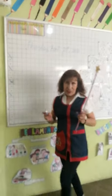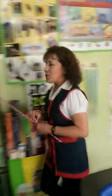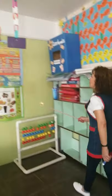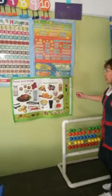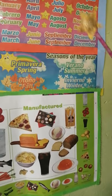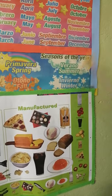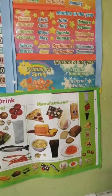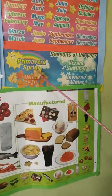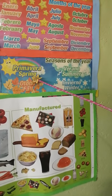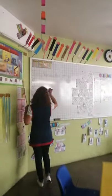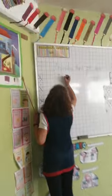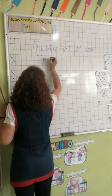Let's continue with the seasons of the year, kids. Everybody repeat: spring, summer, fall, and winter. In what season are we, kids? We are in spring. Now we are in spring, because spring is the first season of the year. Spring.